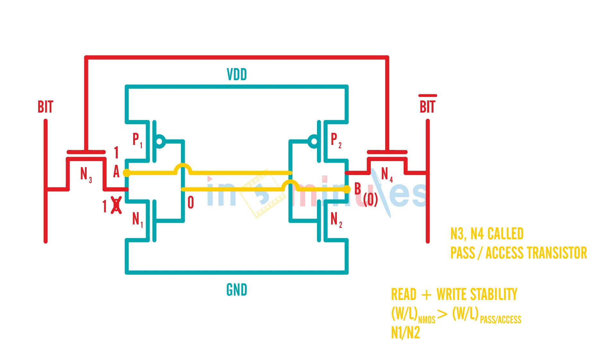W/L of N3 or N4 in turn should be greater than W/L of PMOS - in this case P1 or P2. So with that we complete the read and write stability criteria for a six transistor SRAM. Thank you and stay tuned.